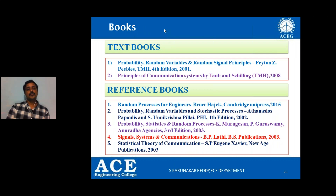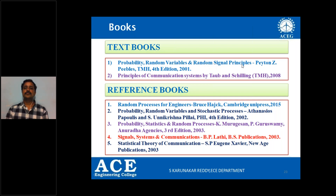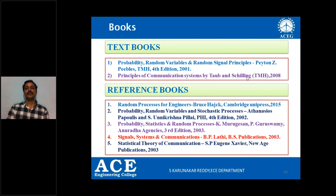The books prescribed in the JNTU syllabus are: first textbook — Probability, Random Variables and Random Signal Principles by Peyton Peebles, a Tata McGraw-Hill publication, fourth edition. You can refer to this for the first four units. For the last unit, Unit 5, you can go with Principles of Communication Systems by Taub and Schilling.